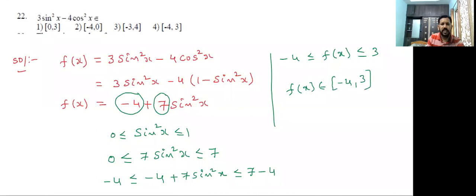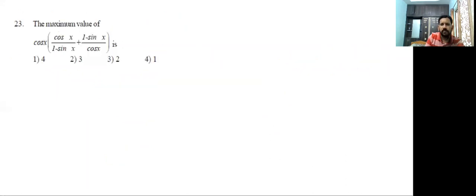The fourth option is correct. The minimum value is -4 and the maximum value is 3. Now the next problem: find the maximum value of cos x/(1 - sin x) + (1 - sin x)/cos x. How to solve this?